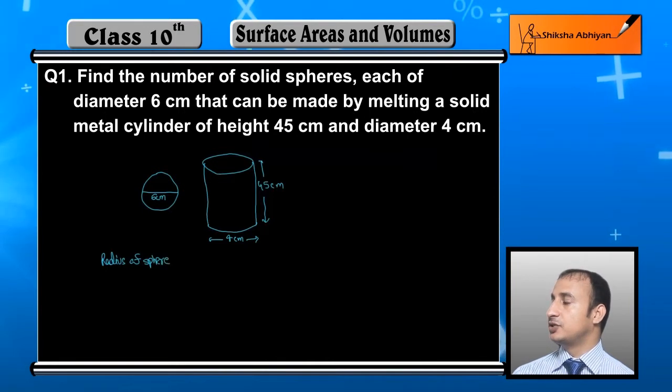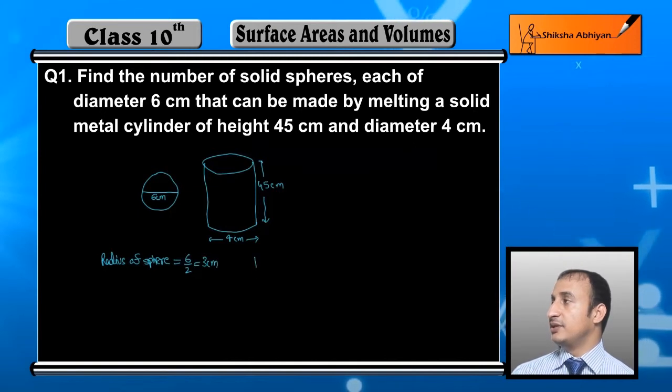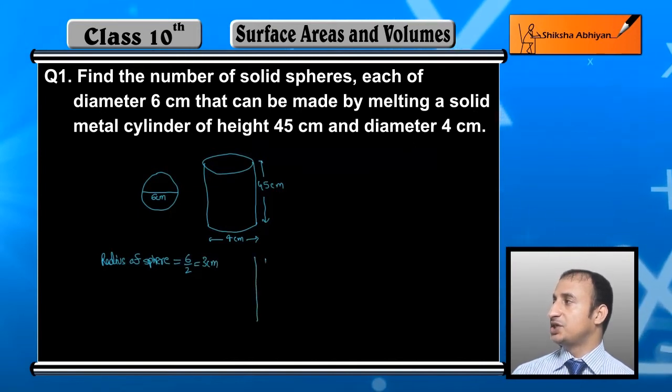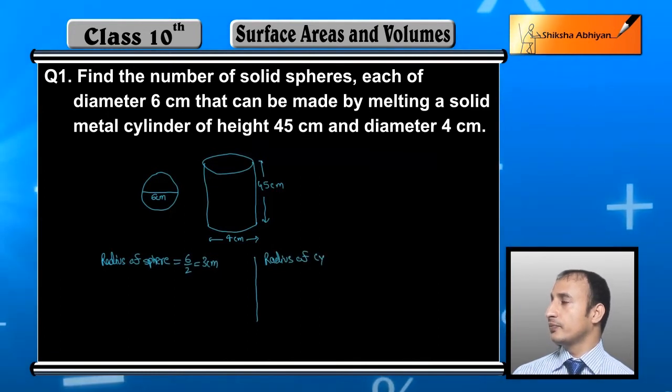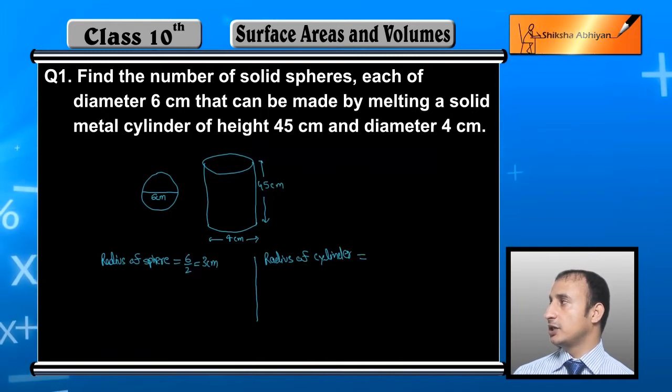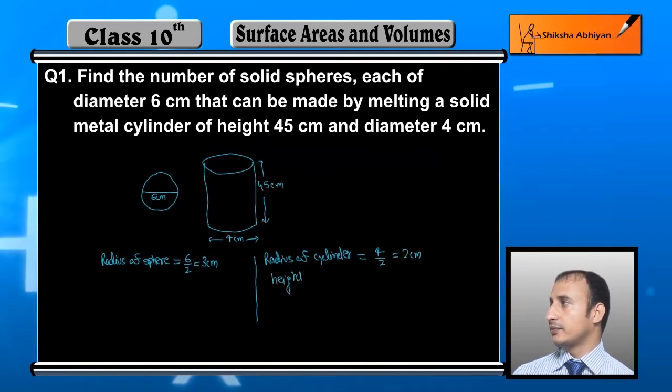Now radius of sphere: 6 divided by 2 equals 3 centimeter. Similarly, radius of cylinder will be 4 upon 2 equals 2 centimeter, because diameter is 4 so radius is half, and height of cylinder is 45 centimeter.